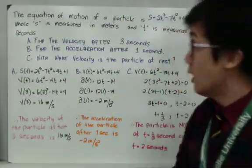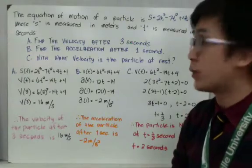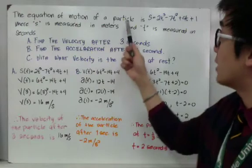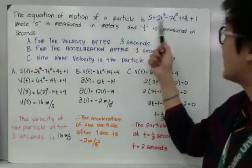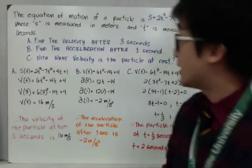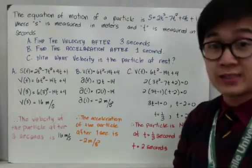Now in this example, we have an equation of motion and we need to answer these three questions. The equation of motion of this particle is s equals 2t cubed minus 7t squared plus 4t plus 1, where s is measured in meters and t is measured in seconds.